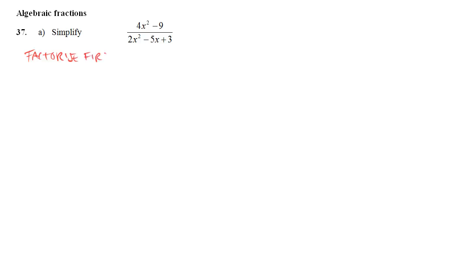The key to simplifying algebraic fractions is that you have to factorize first. You can't cancel anything until it is a factor of the numerator and the denominator. So looking at the top, you've just got to get used to spotting these. This is the difference of two squares.